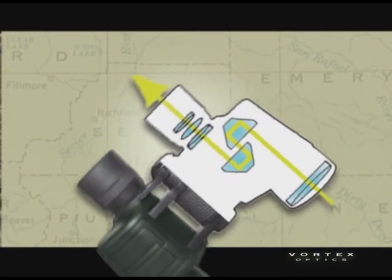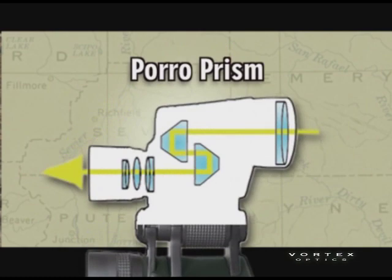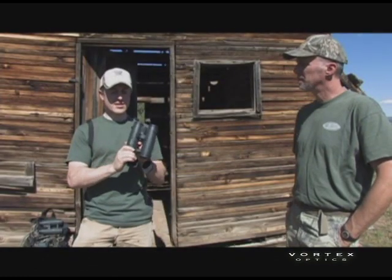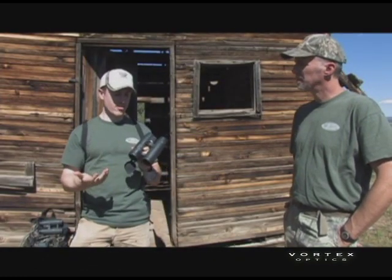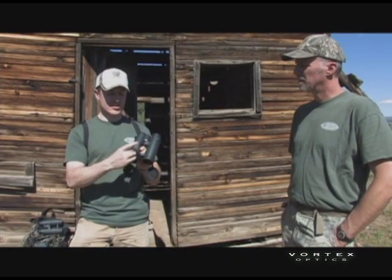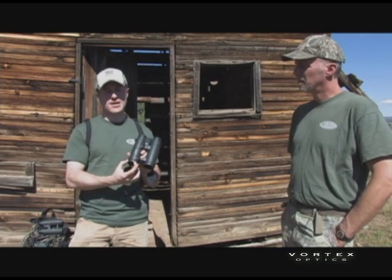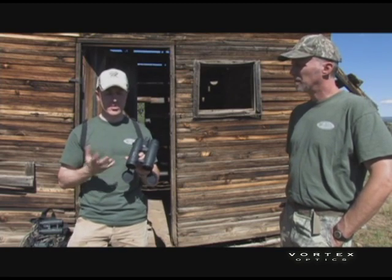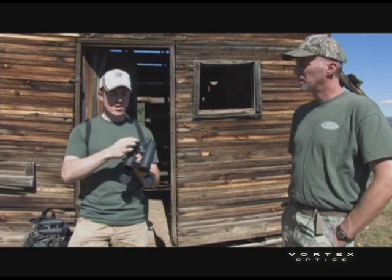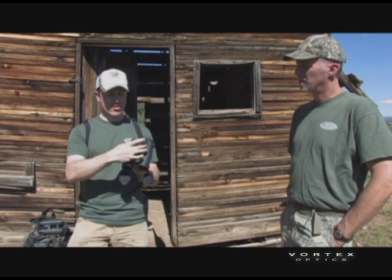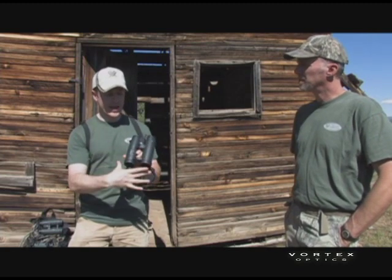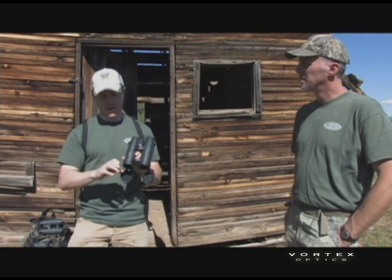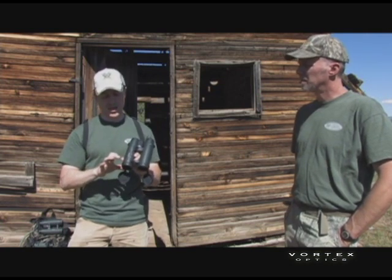On the outside of the binocular, the easiest way to determine which type of prism it has — for instance, this binocular is easily identifiable as a roof prism binocular because of these straight barrels that it has. On a poro prism binocular, it'll be that real traditional look where the barrels are narrower out here and then they bump out wider towards the objective lenses.